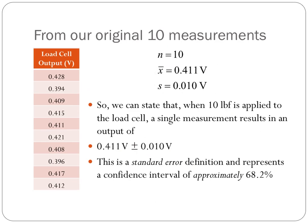However, remember that we were not able to take an infinite number of measurements, so the mean and the standard deviation are only estimates of the true population values. If we took more measurements, we would have better certainty in our mean and standard deviation estimates. In class and in future videos, we're going to discuss how we can correct our confidence interval approximation for the fact that we did not take an infinite number of measurements and these are only estimates of the population mean and standard deviation.